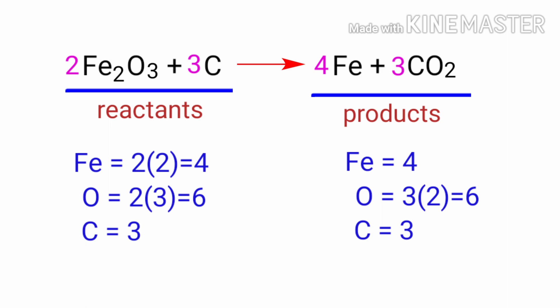The equation is now balanced. There are 4 iron atoms, 6 oxygen atoms, and 3 carbon atoms on both sides.